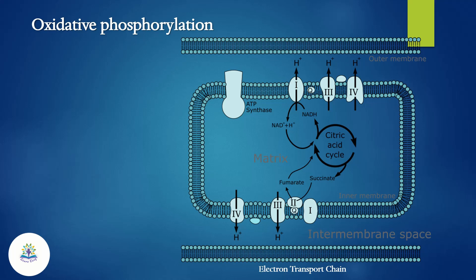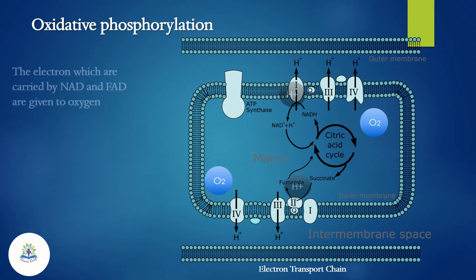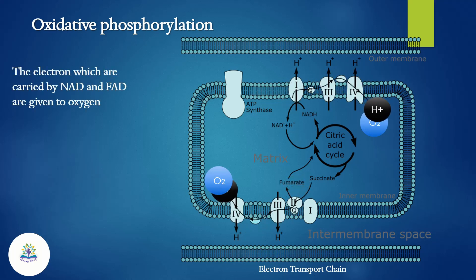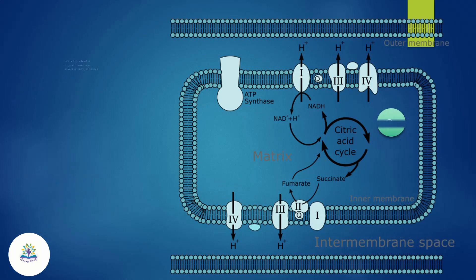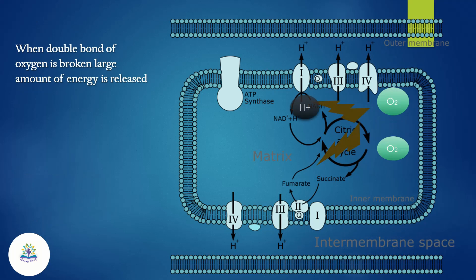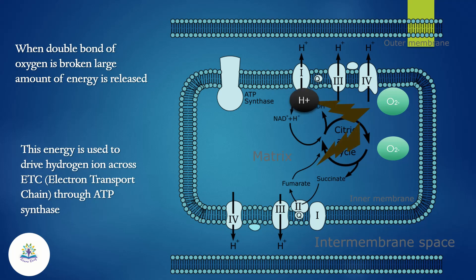The final step is called oxidative phosphorylation, or electron transport chain linked phosphorylation. The electrons carried by NADH and FADH2 are given to oxygen. The double bond of oxygen is broken and they combine with hydrogen to form water. When the double bond of oxygen is broken, a large amount of energy is released.